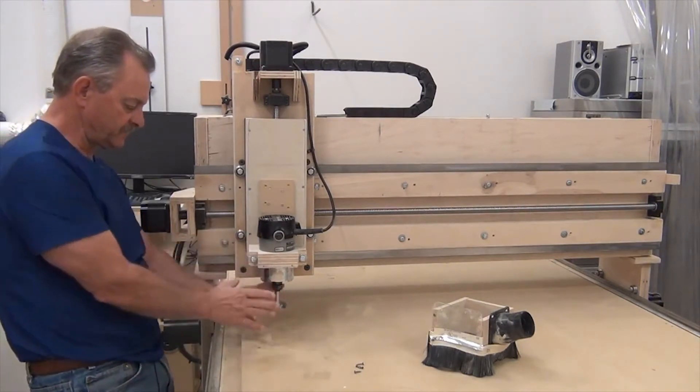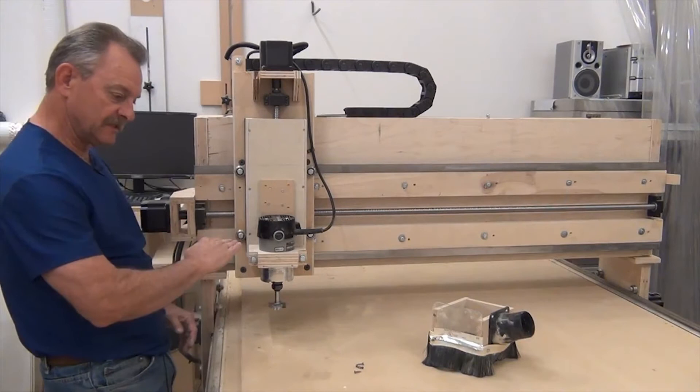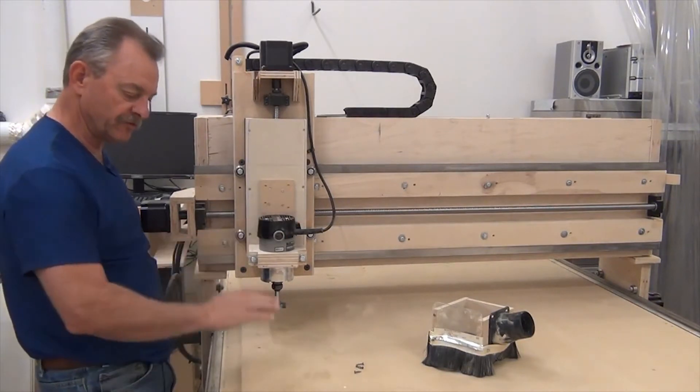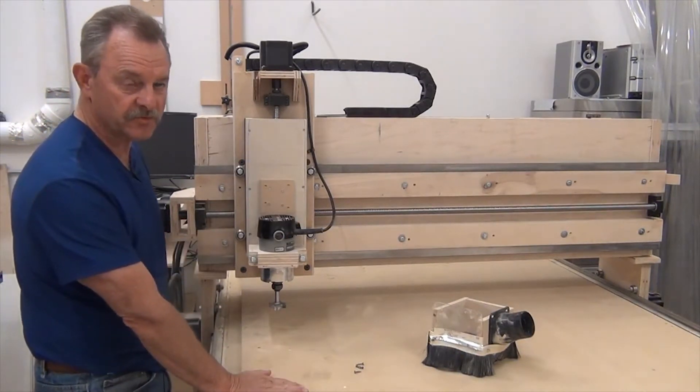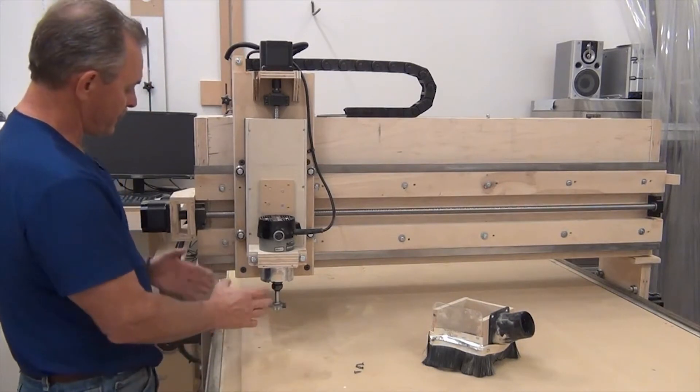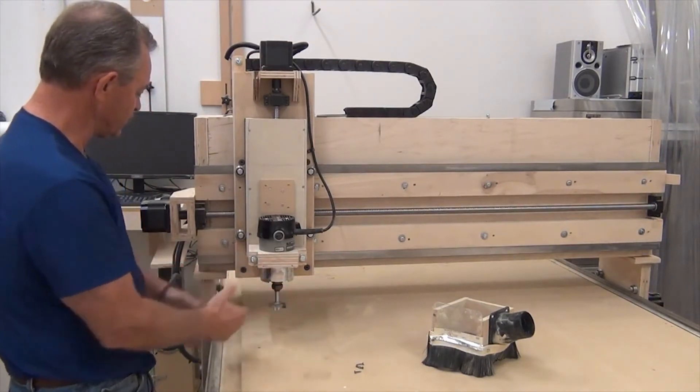And that will keep this because it's tilting. And the surfacing bit is digging in on one edge when it goes to surface. So I can't surface the top of the spoil board.